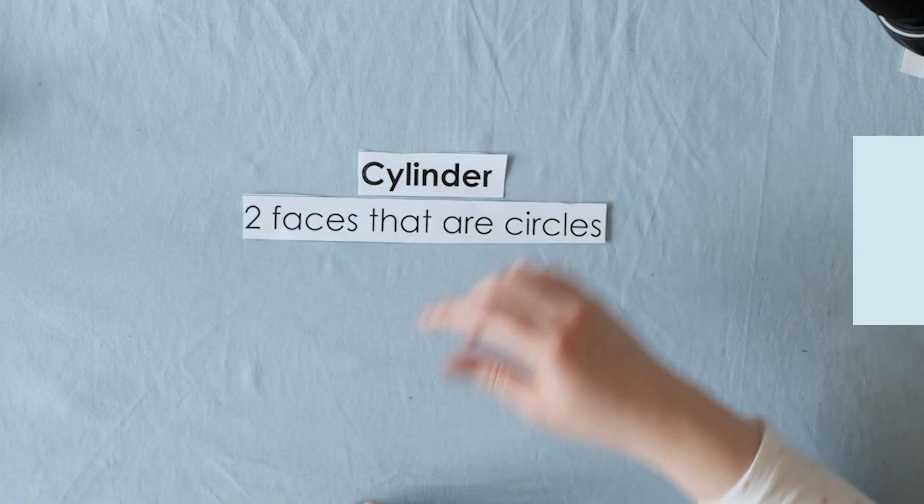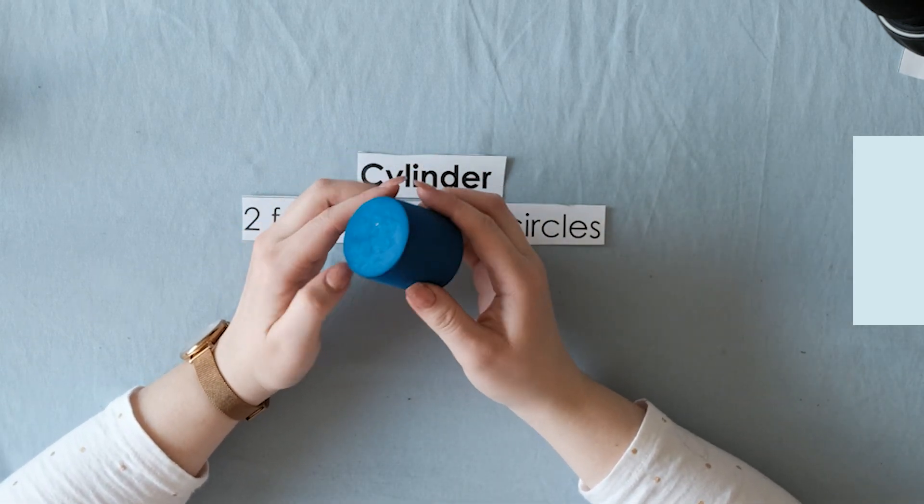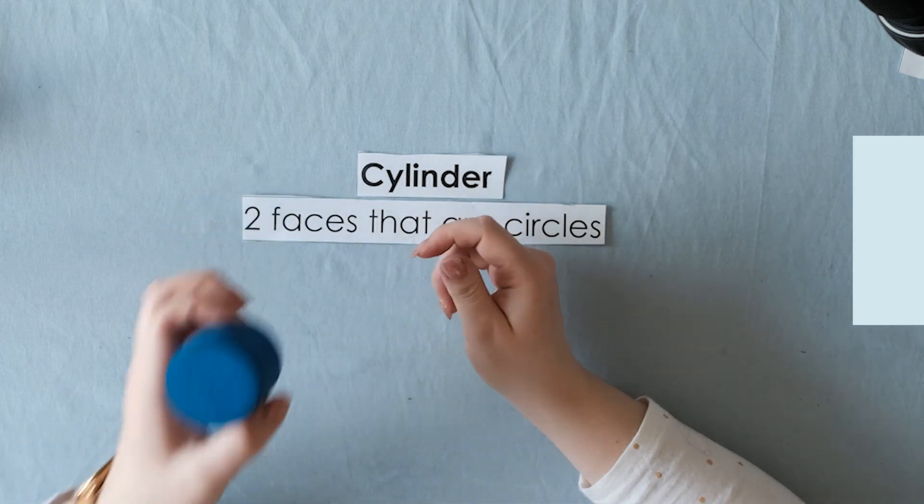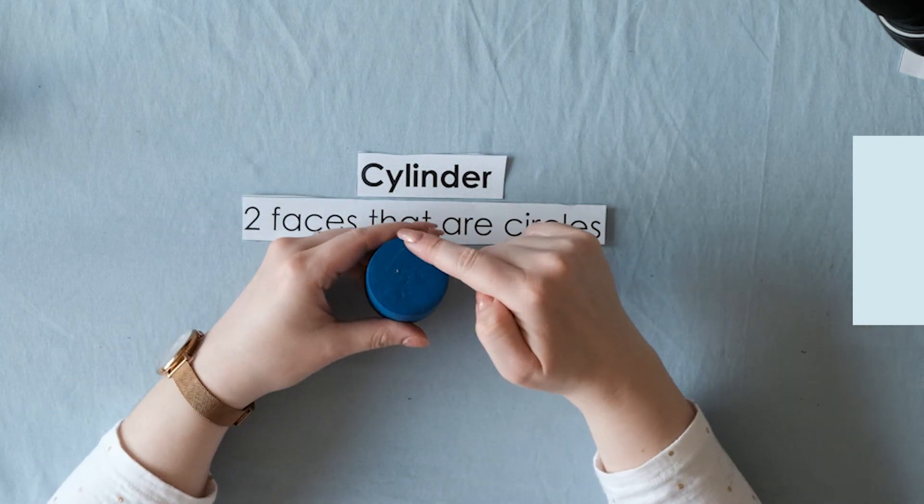Remember what we just talked about. This one has two faces, and they are circles. You can see the 2D shape inside of the 3D shape. Another part of it is that it's curved, with curves like this.